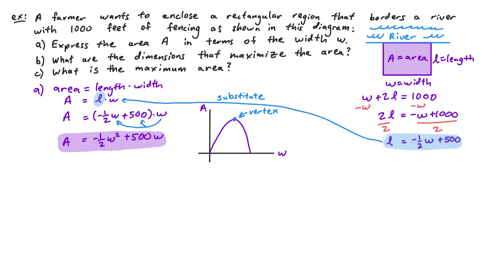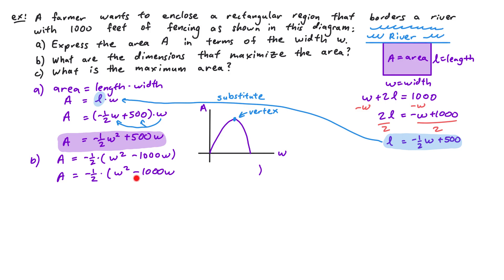To find the vertex, we write our quadratic in standard form. Start by factoring out negative one-half. Dividing negative one-half W squared by negative one-half gives W squared, and dividing 500W by negative one-half gives minus 1000W. So we have A equals negative one-half times the quantity W squared minus 1000W, leaving space before closing the parentheses. To complete the square, take negative 1000, divide by 2 to get negative 500, and square it to get 250,000.